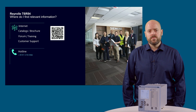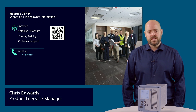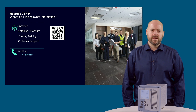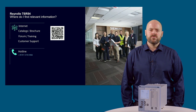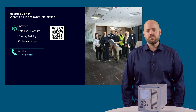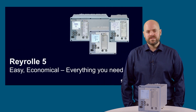You can find further information about the Rearroll 7SR5-4 transformer protection device via the internet, the Rearroll 5 catalogue, and various other locations. If further information about the 7SR51 feeder protection and 7SR57 motor protection devices is required, there are also videos in this series that cover those products. Thank you for viewing this presentation.